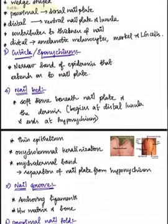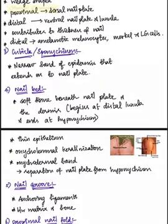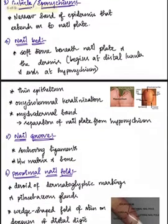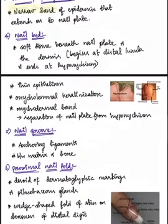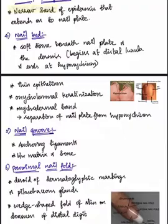The distal part of the nail matrix contains amelanotic melanocytes, Merkel cells, and Langerhans cells. The eponychium is the skin covering the proximal nail fold and the cuticle is the tissue immediately distal to the eponychium. The nail bed is soft tissue present beneath the nail plate and dermis, containing a layer of thin epithelium formed by onychodermal keratinization without the formation of keratohyalin granules.